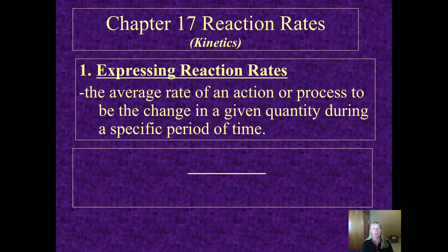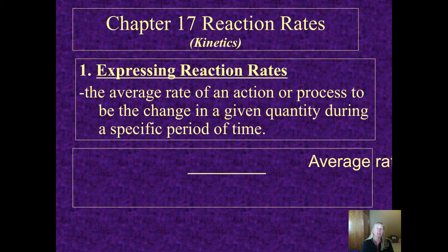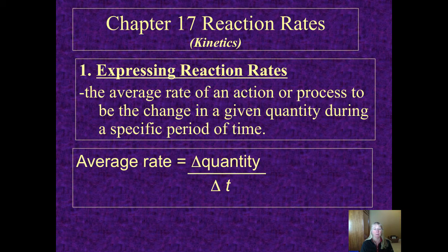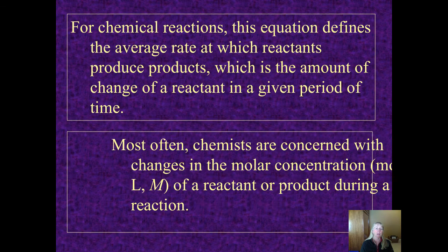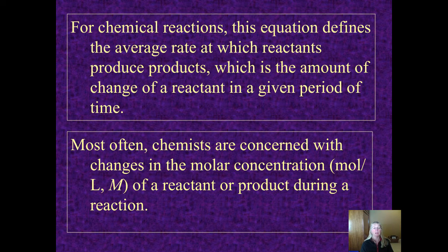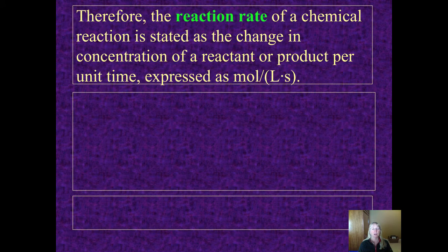When you want to express the rate of a reaction, you can measure something called the average rate, which is a change in a given quantity per some unit of time. Frequently what we'll use is some kind of molarity, that's often a very common one, and that would be the number of moles per liter, and often it might be per second, but it could be per minute or any unit of measurement that you wish.